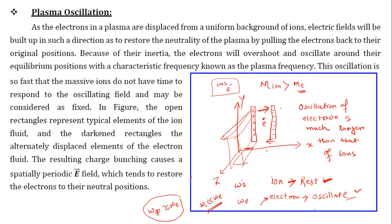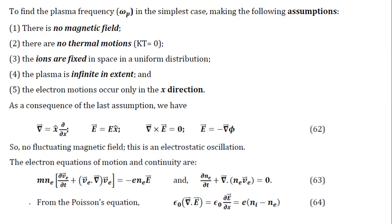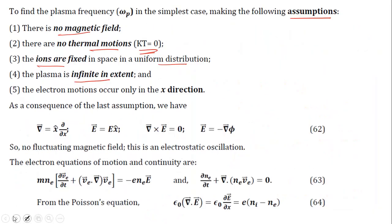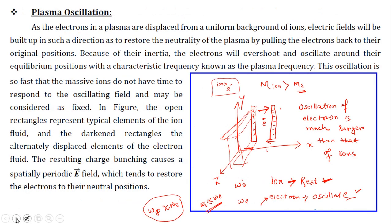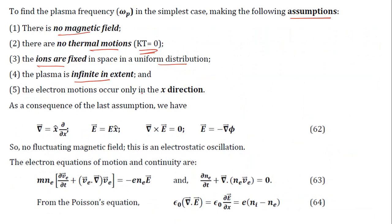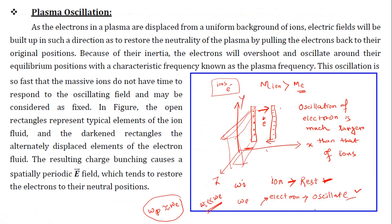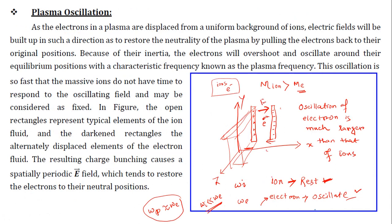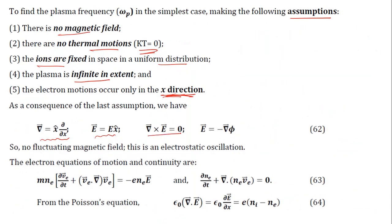To calculate the oscillation frequency of the electron, we take the following assumptions: no external magnetic field, no thermal motion (kT = 0), ions are fixed in space with uniform distribution, plasma has infinite extent in y and z directions, and electron motion occurs only in the x direction. Therefore the gradient is only along x, and the electric field is along x as well.